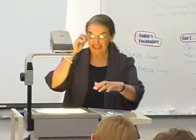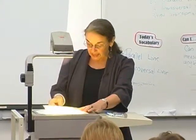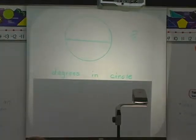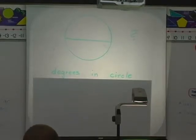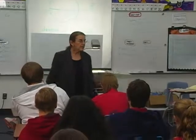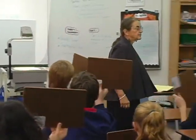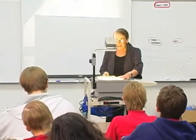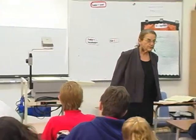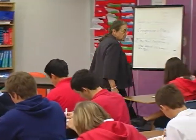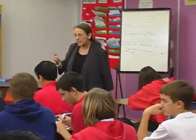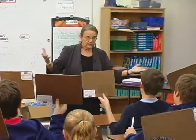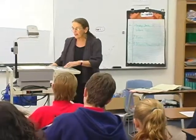A quick review of degrees: on your slate, put the number of degrees in a circle. How many? 360. Erase. And degrees in a semicircle — check your partner, see if you have the same. Show me. And it is 180 degrees. Excellent. Erase the whole thing.